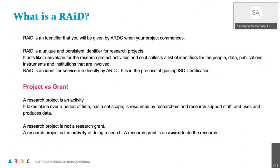The second identifier you'll be given for your project is a RAID. RAID is a unique identifier for projects. It acts as an envelope with a metadata manifest that collects other persistent identifiers your project encounters during the course of its activities. I want to be really clear that it's not for grants — it's for a project, which we view as an activity. A research project is an activity that takes place over a period of time with set bounds or scope, resourced by researchers and support staff, uses and produces data, and may interact with other institutions and organisations. A grant is awarded to a project to do the research activity.